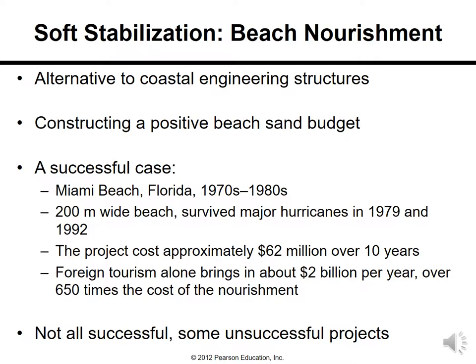Soft stabilization methods like beach nourishment are alternatives to coastal engineering structures, constructing a positive beach sand budget. A successful case is Miami Beach, Florida in the 1970s and 1980s — a 200-meter-wide beach that survived major hurricanes in 1979 and 1992. The project cost approximately 62 million dollars over 10 years, but foreign tourism alone brings about 2 billion dollars per year — over 650 times the cost of the nourishment. Not all projects are successful, however.